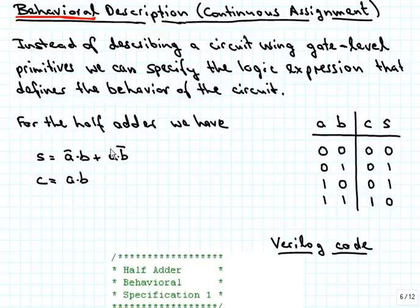For the half adder, we are now going to say that S is equal to A overbar AND B OR A AND B overbar. This is, as we mentioned before, the same thing as the XOR of A and B. For the carry, we just say the carry is equal to A and B. Here is again the truth table of the half adder.